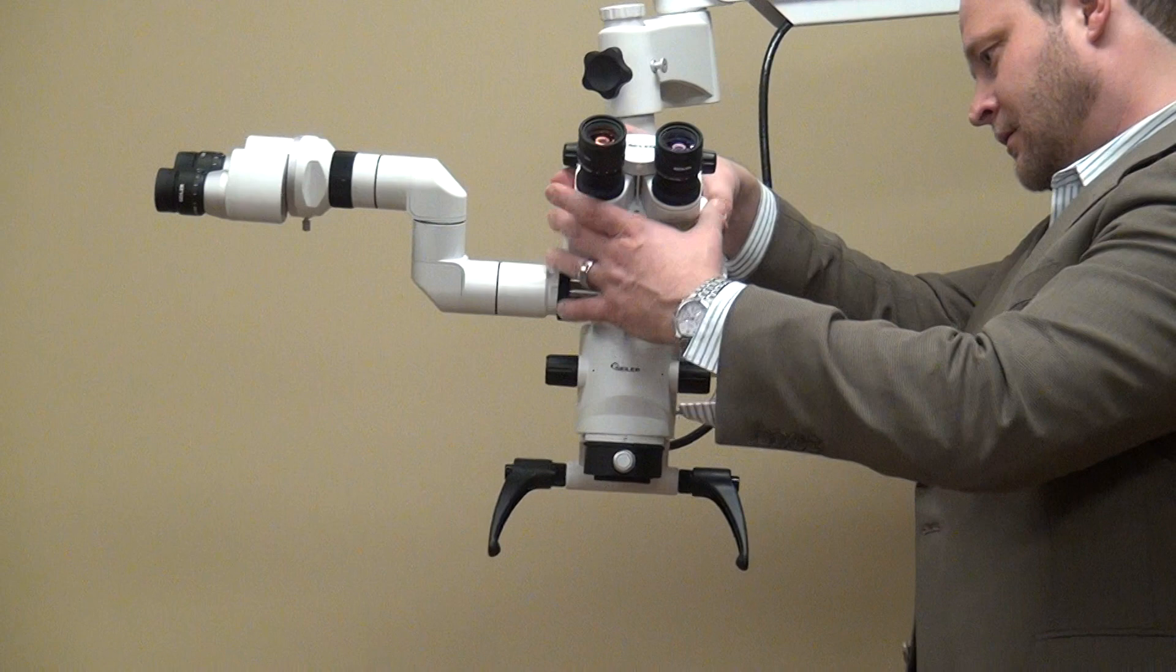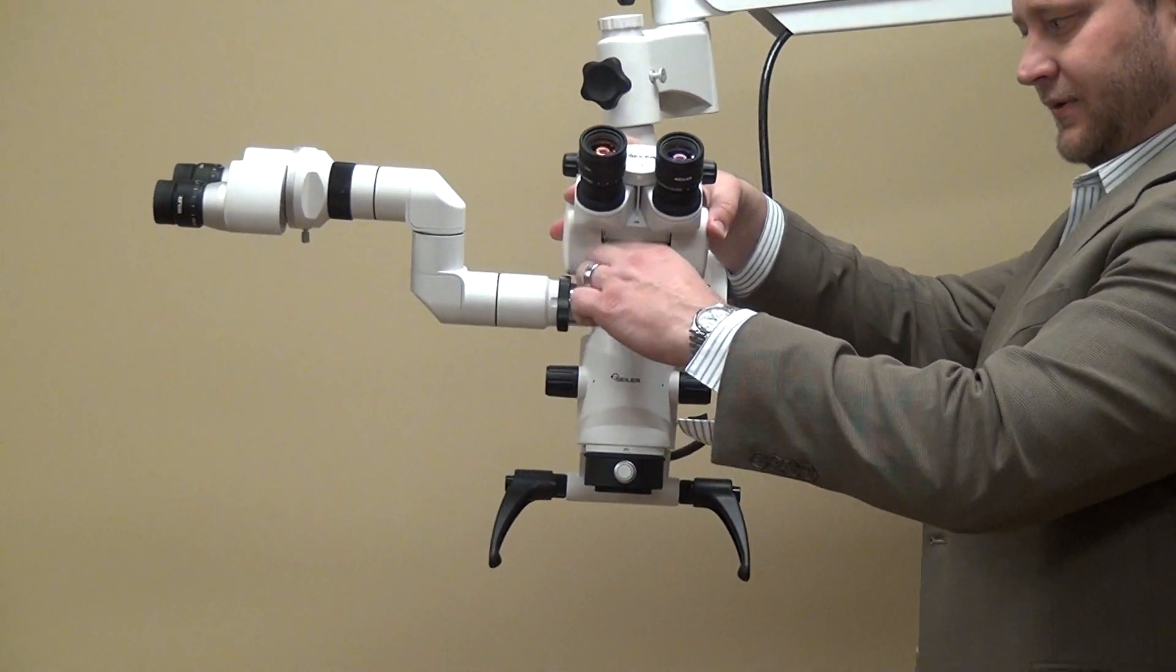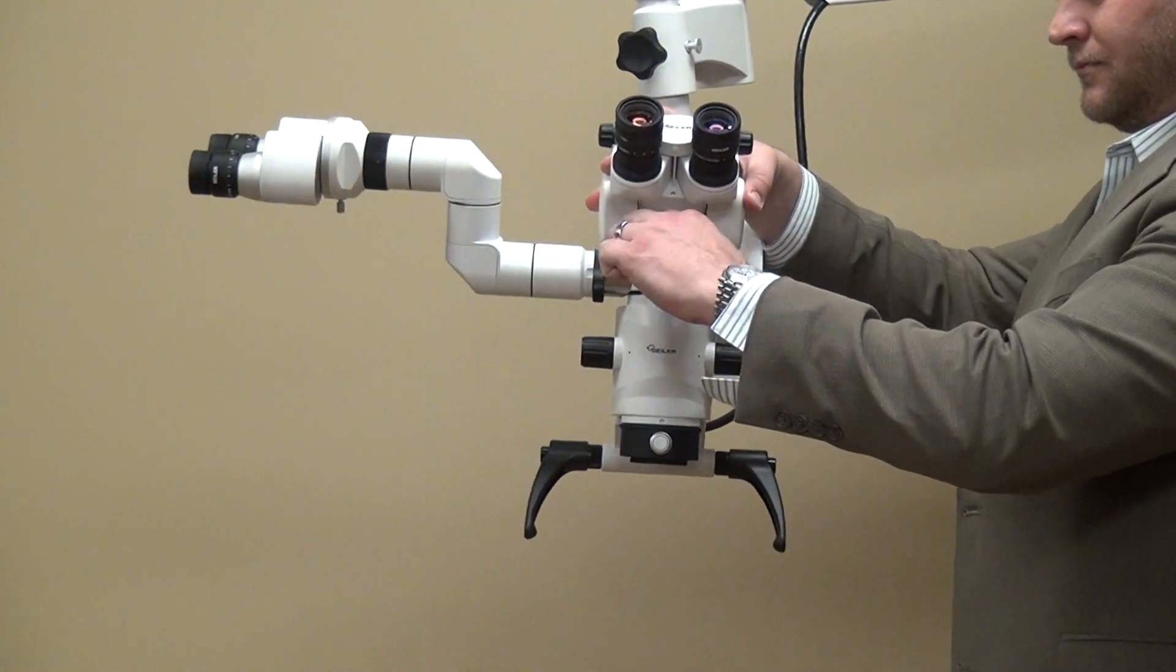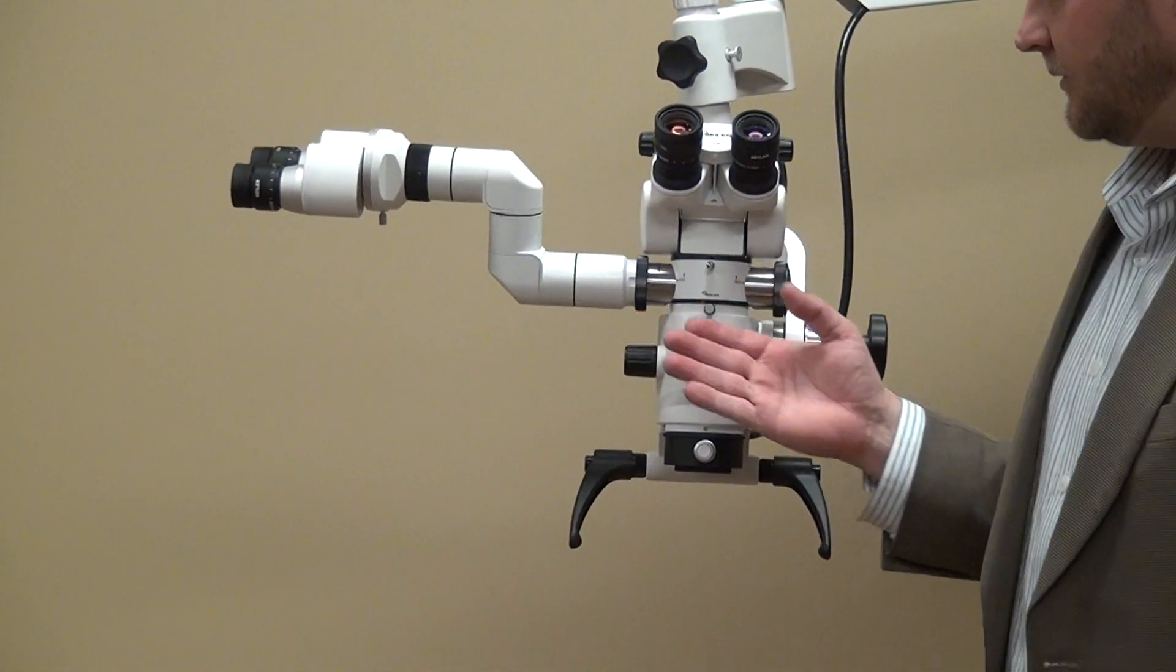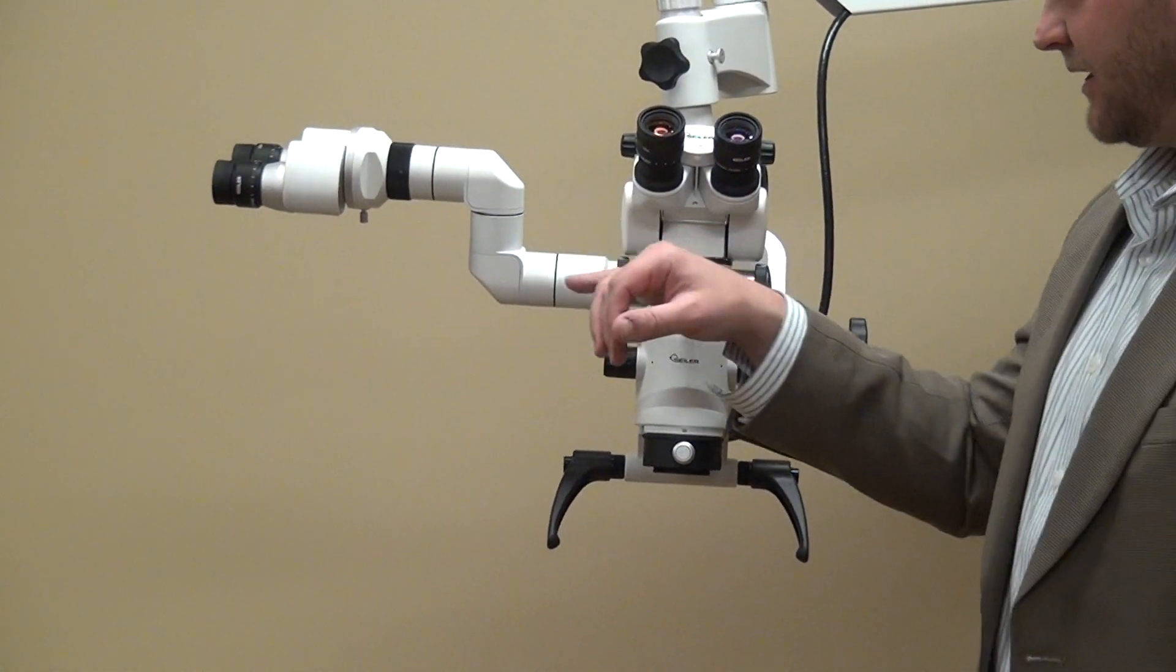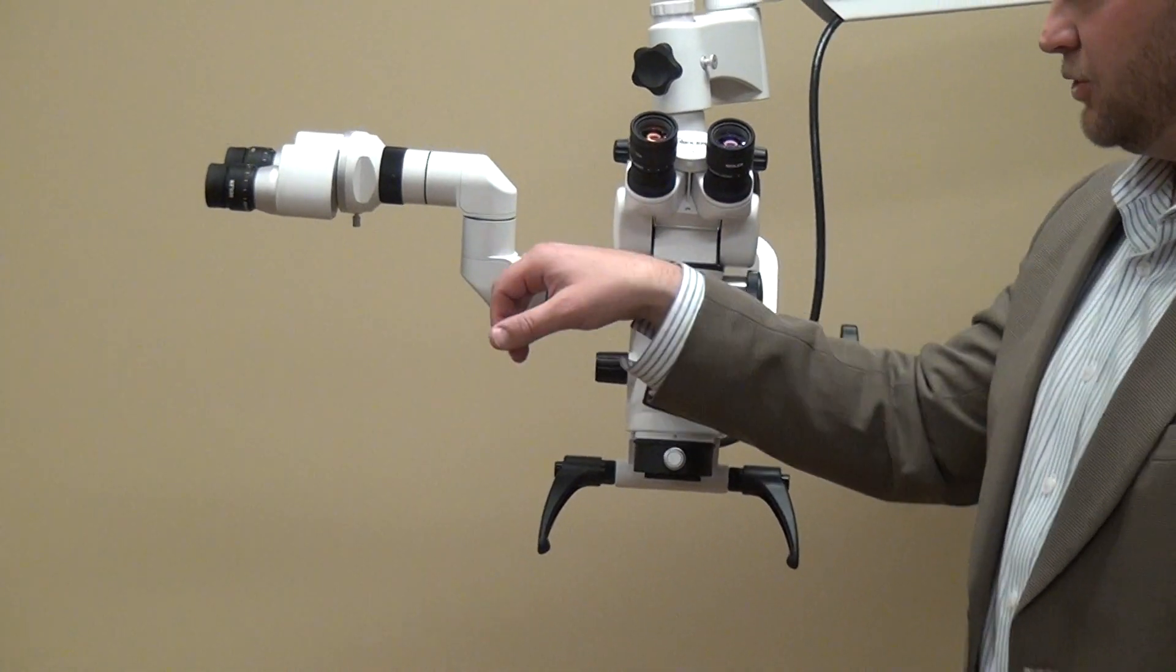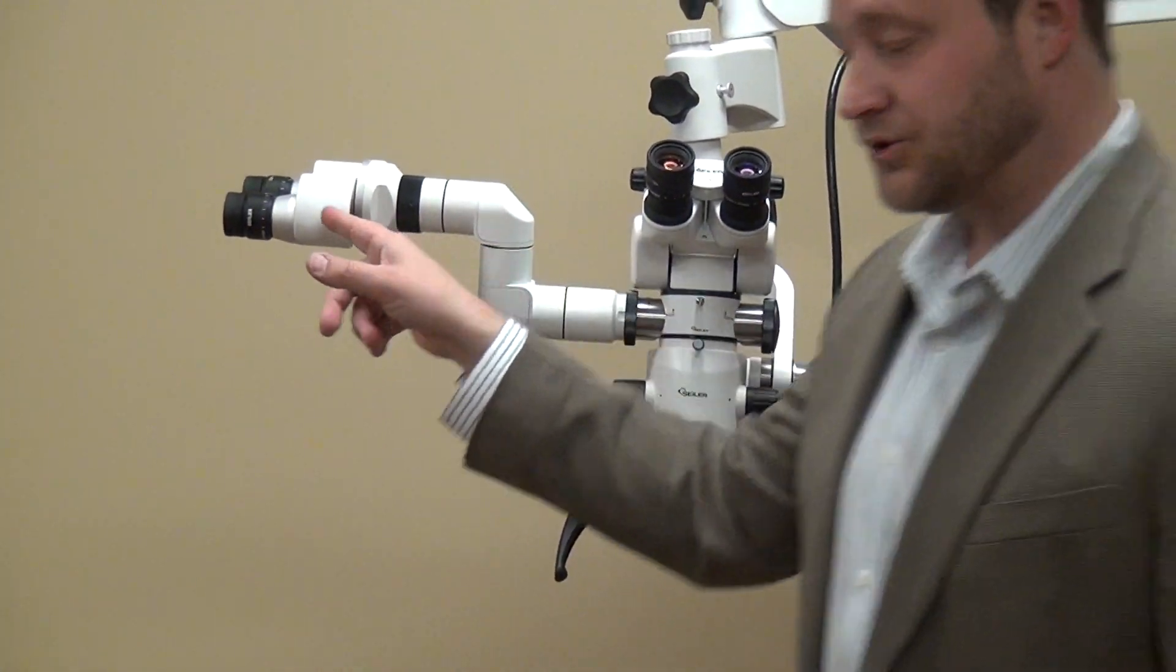So put this in and this is your assistant binocular head. So you've got your beam splitter, tube coupler, and your straight binocular head.